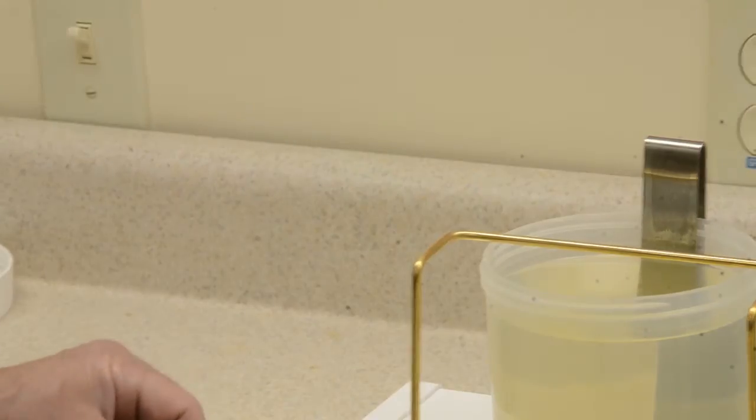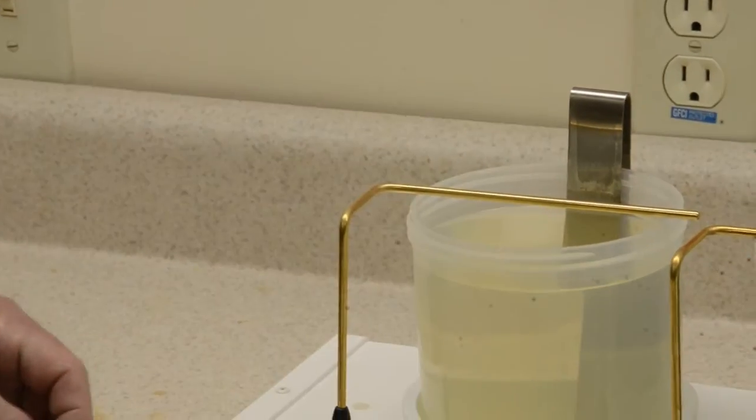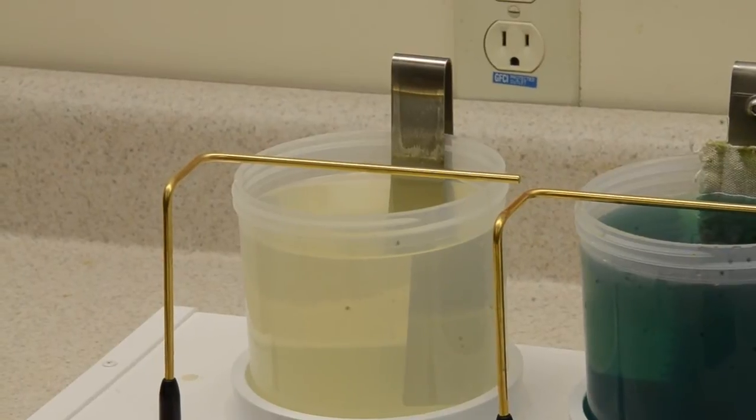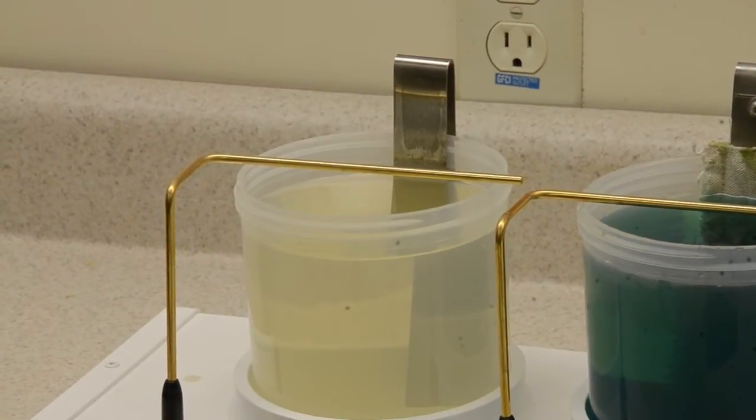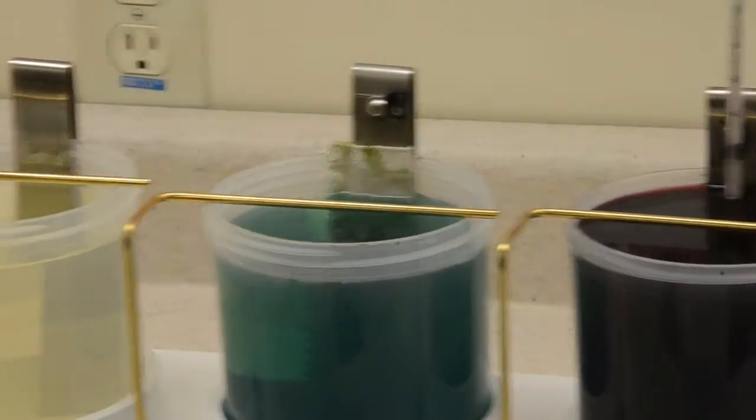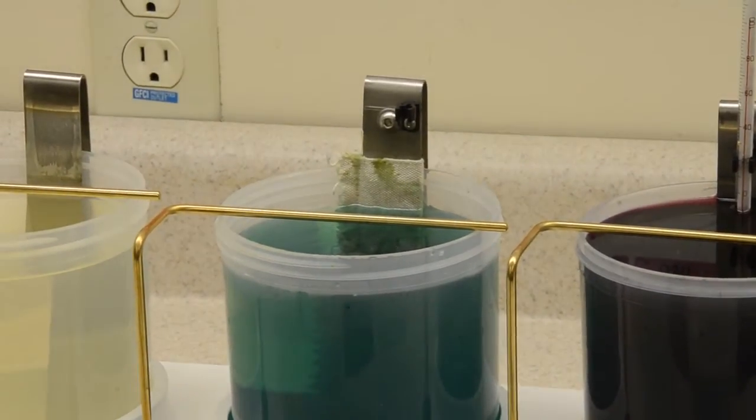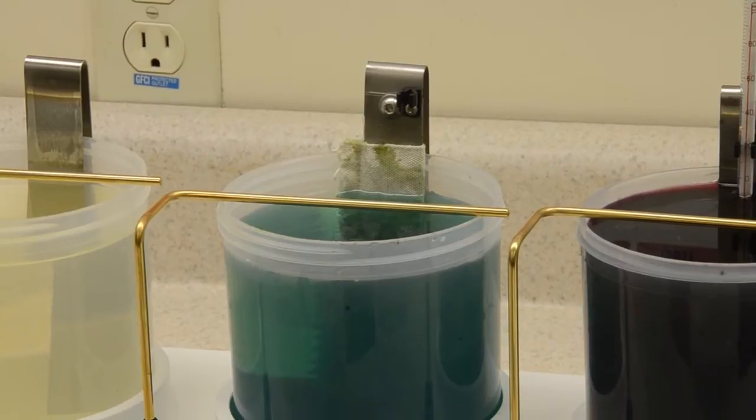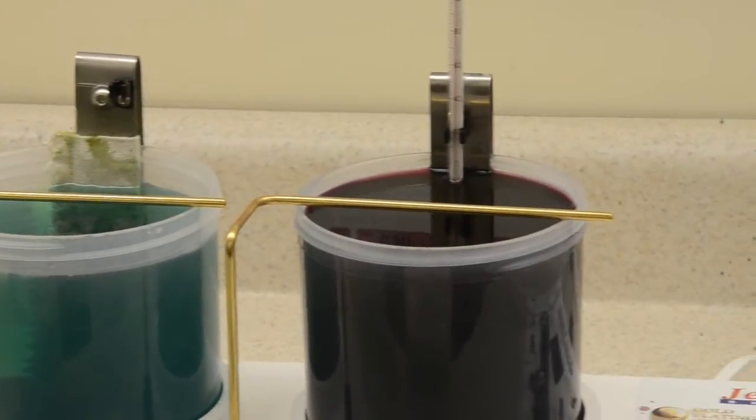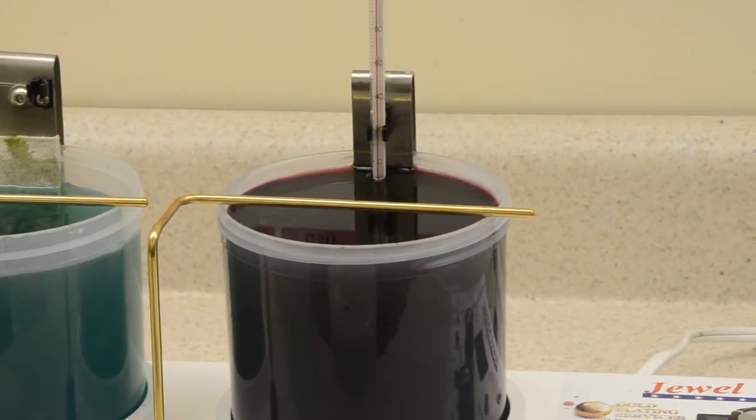It'll be a three step process where we begin by electro cleaning the surface, which cleans any material and makes the surface hydrophilic or wet out. And then we'll go on to the wood's nickel strike that we've set up with a bagged nickel anode. And the final step will be plating in the 24 karat bright gold solution.